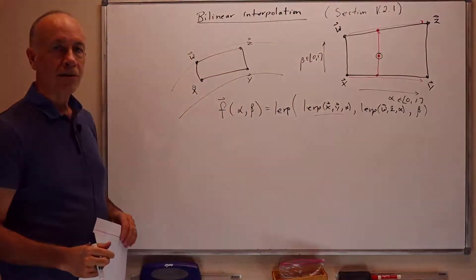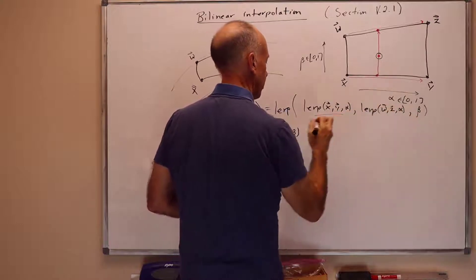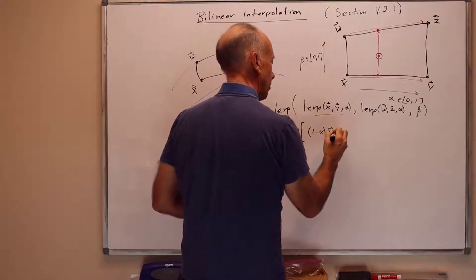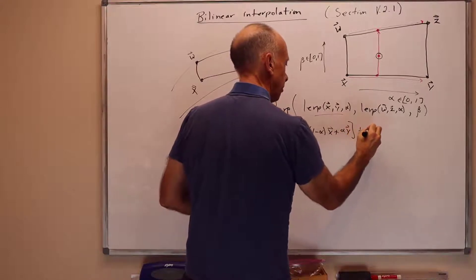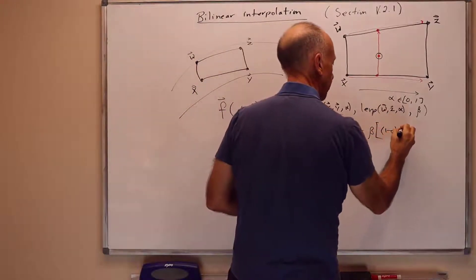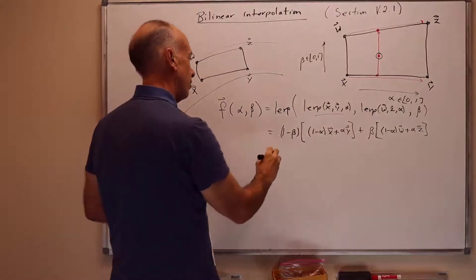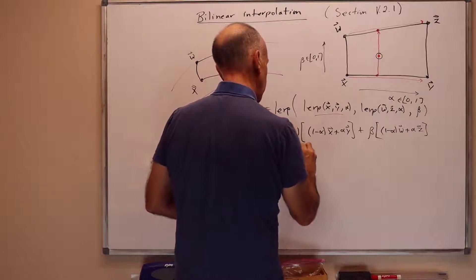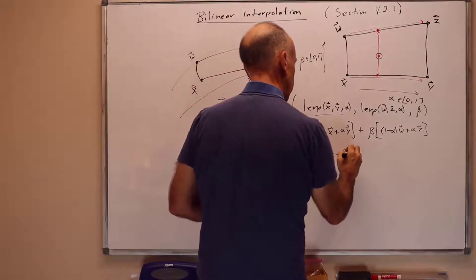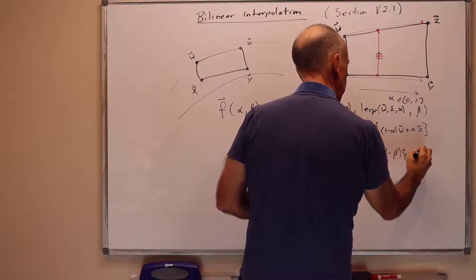So it's a very nice intuitive way to do it. But we can also rewrite this as 1 minus beta. So we're LERPing by fraction beta. So that's 1 minus beta times LERP of x, y, alpha. And LERP of x, y, alpha is 1 minus alpha x plus alpha y. And then it's plus beta times LERP of w, z, alpha. So that's 1 minus alpha times w plus alpha times z. So we've just applied the LERPing formula three times here. I can rewrite this by regrouping as 1 minus alpha times 1 minus beta plus x plus beta times w, plus alpha times 1 minus beta y plus beta times z.